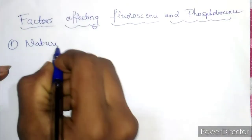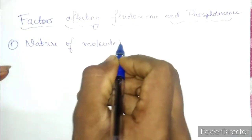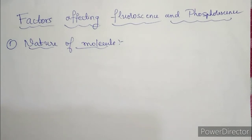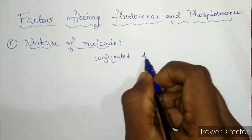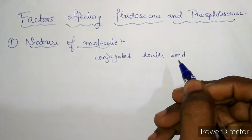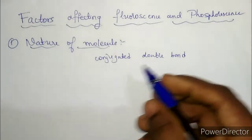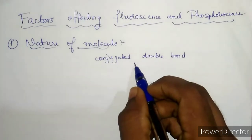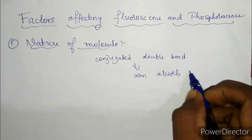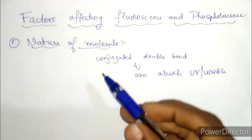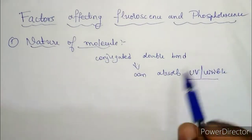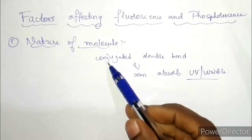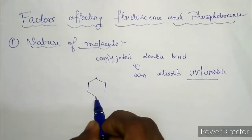Not all molecules can exhibit fluorescence or phosphorescence. Only molecules that have conjugated double bonds can exhibit these phenomena, because compounds having conjugated double bonds can absorb either UV or visible radiation. So we can conclude that molecules which can absorb UV or visible radiation give rise to fluorescence and phosphorescence.